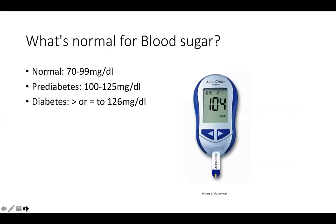Normal fasting blood sugar is 70 to 99 mg/dL. A reading of 100 to 125 would be considered pre-diabetes, and 126 or higher indicates diabetes. If this occurs once, labs would be redrawn on a different day to confirm. People who are diabetic or monitoring blood sugar can use a blood glucose meter — pricking a finger to get a small drop of blood that feeds into the monitor and reads the glucose level quickly.